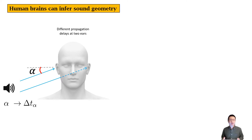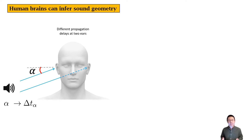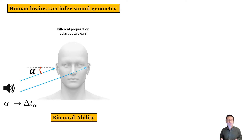We know that the human brain has the ability to infer sound geometry. When the sound source is at angle alpha relative to the human ears, it actually creates a delay delta T alpha at the two ears. By analyzing this time difference of arrival, humans can tell in which direction the sound is coming from. We call this human brain ability the binaural ability.